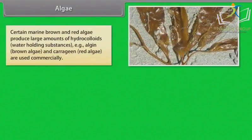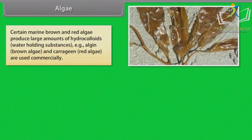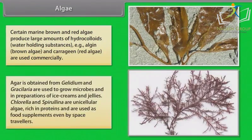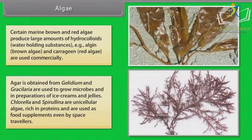Certain marine brown and red algae produce large amounts of hydrocolloids — water-holding substances. Algin from brown algae and carrageenan from red algae are used commercially. Agar is obtained from Gelidium and Gracilaria and is used to grow microbes and in preparations of ice creams and jellies. Chlorella and Spirulina are unicellular algae rich in proteins and are used as food supplements even by space travelers.